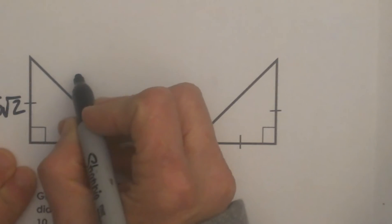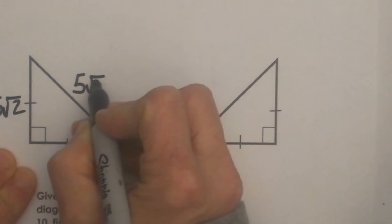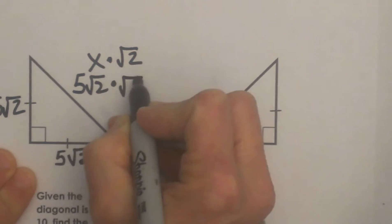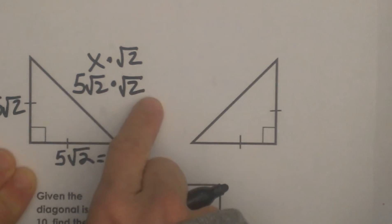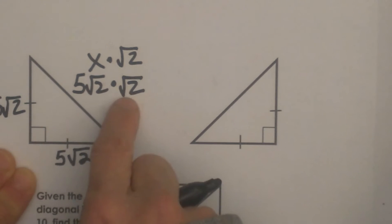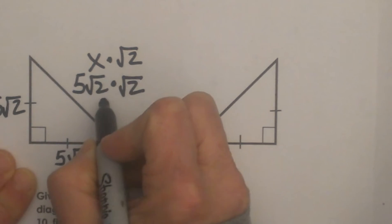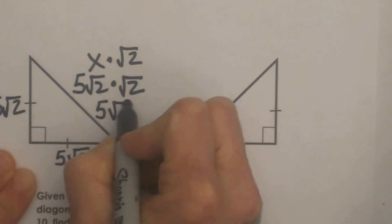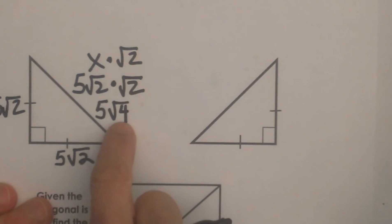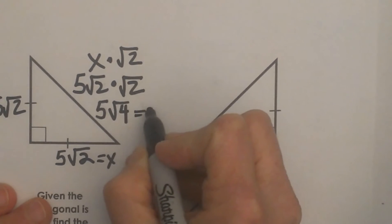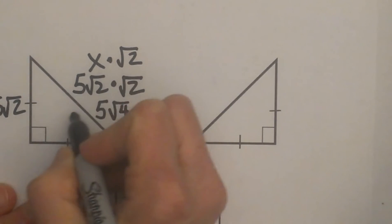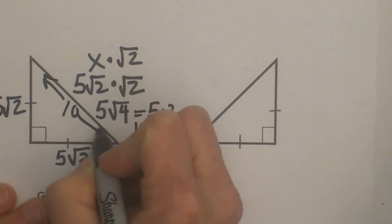So I have 5 square root 2 for x and I am going to multiply it by the square root of 2. When you have two values in the radical you can multiply those together. So I am going to have a 5 on the outside and then the square root of 4, because 2 times 2 is 4. The square root of 4 is 2, so that simplifies to 5 times 2, which is 10. That means the length of the hypotenuse is 10.